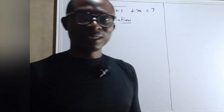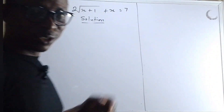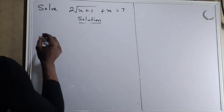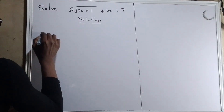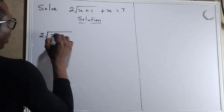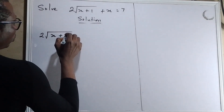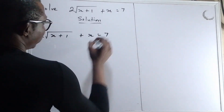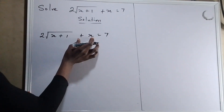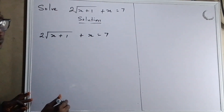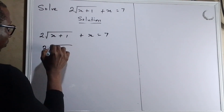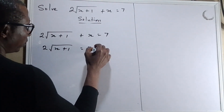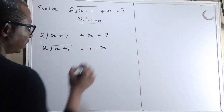Hi my wonderful students. Can we solve this problem together? You have 2 square root of x plus 1 plus x equals to 7. The first thing is to move this x to the other side, so we have 2 square root of x plus 1 equals to 7 minus x.